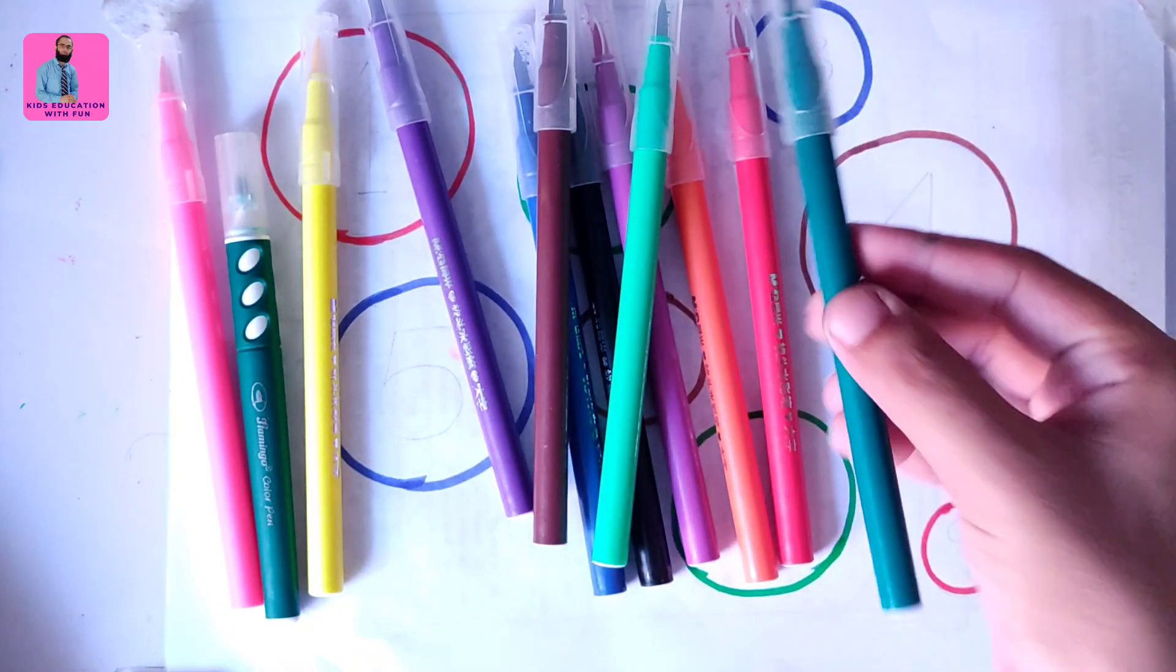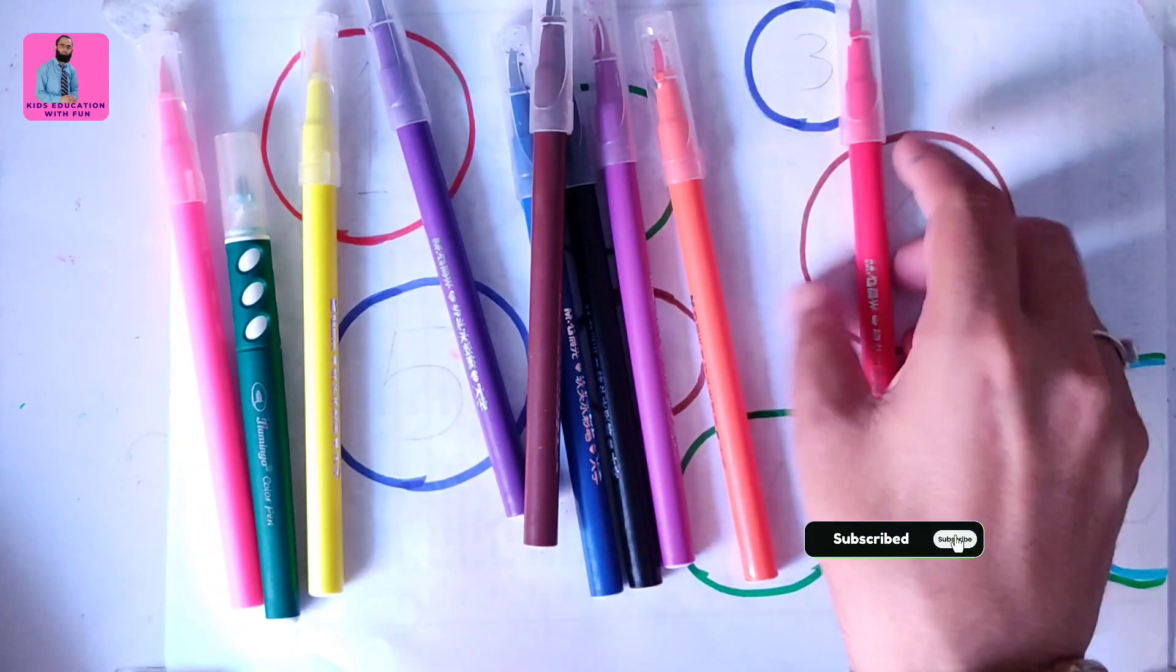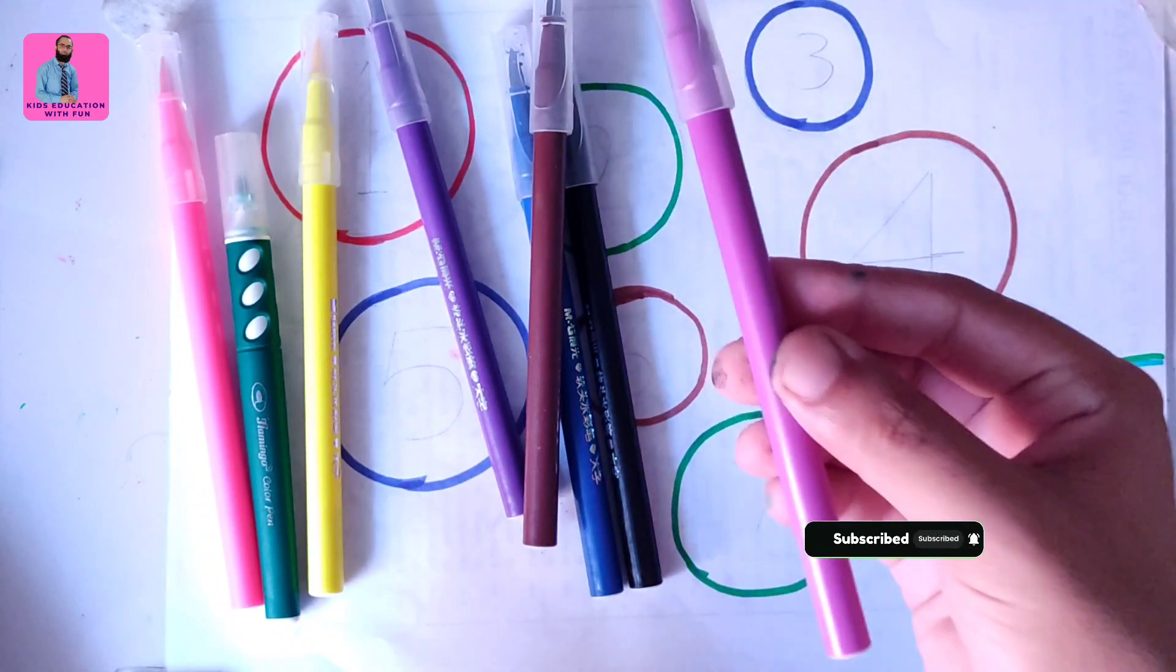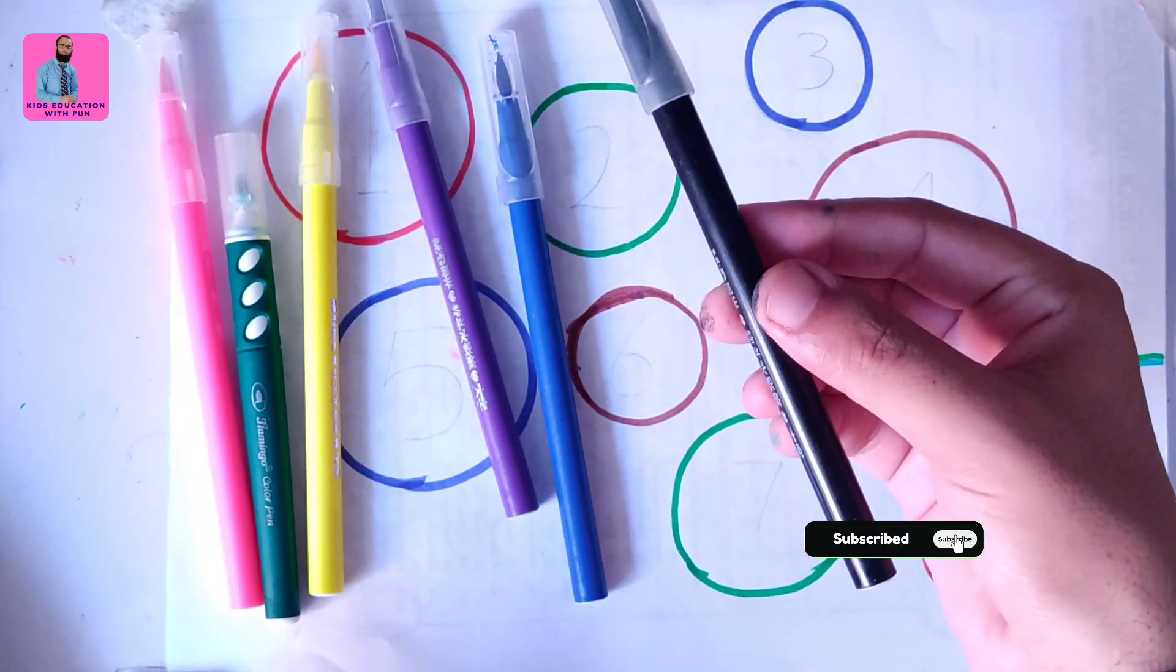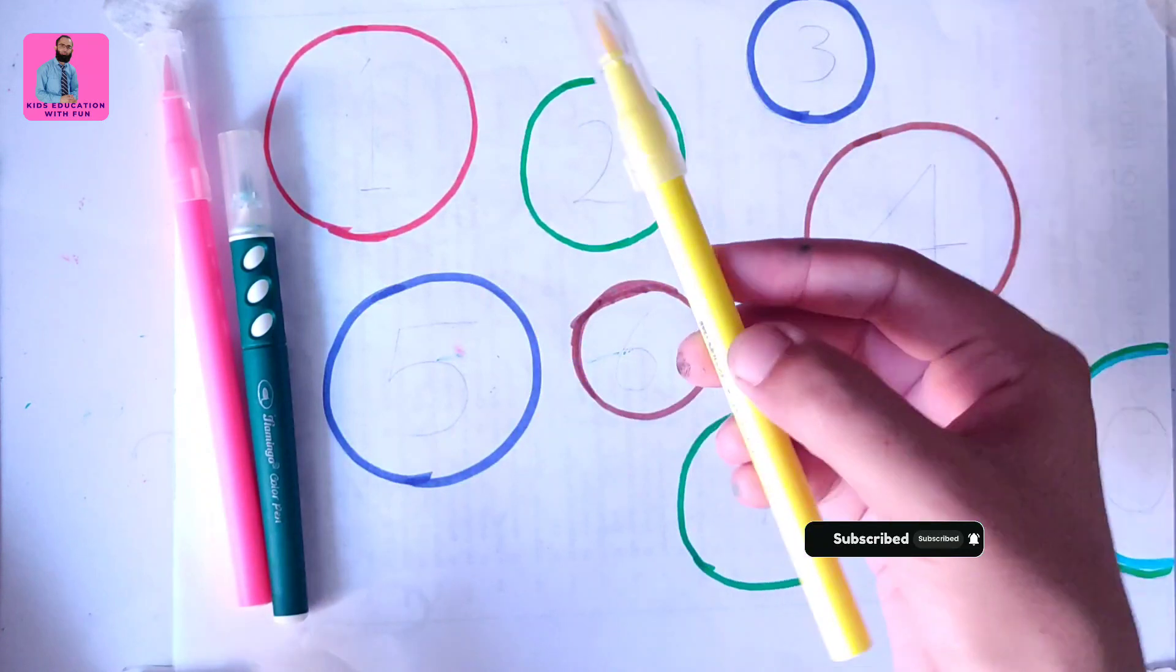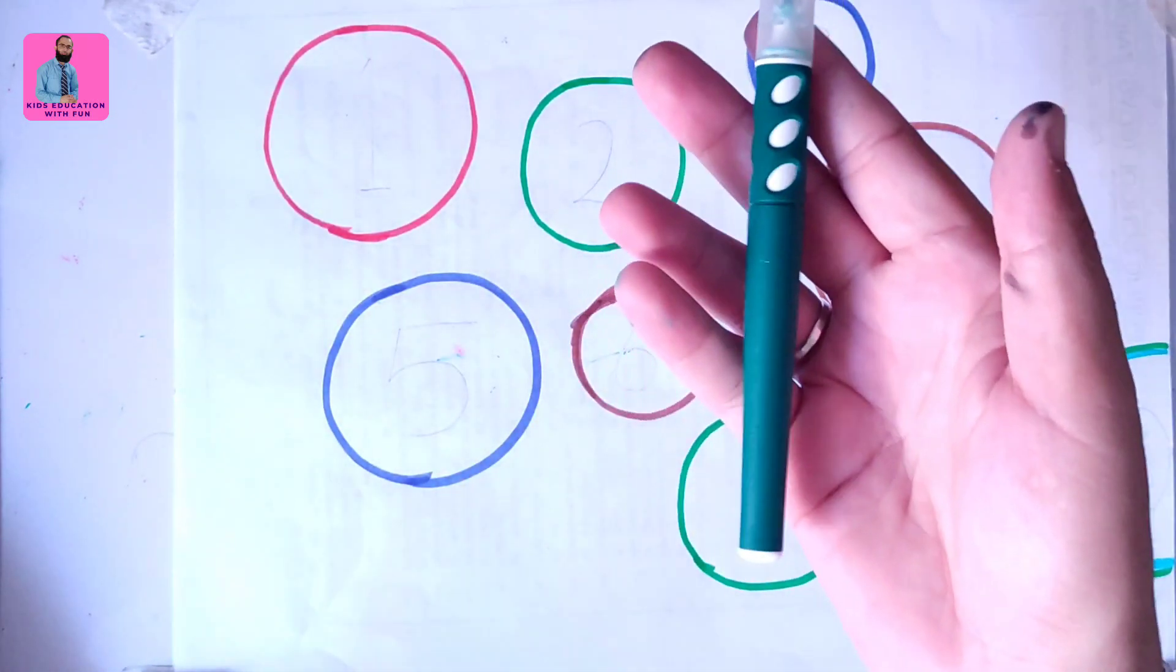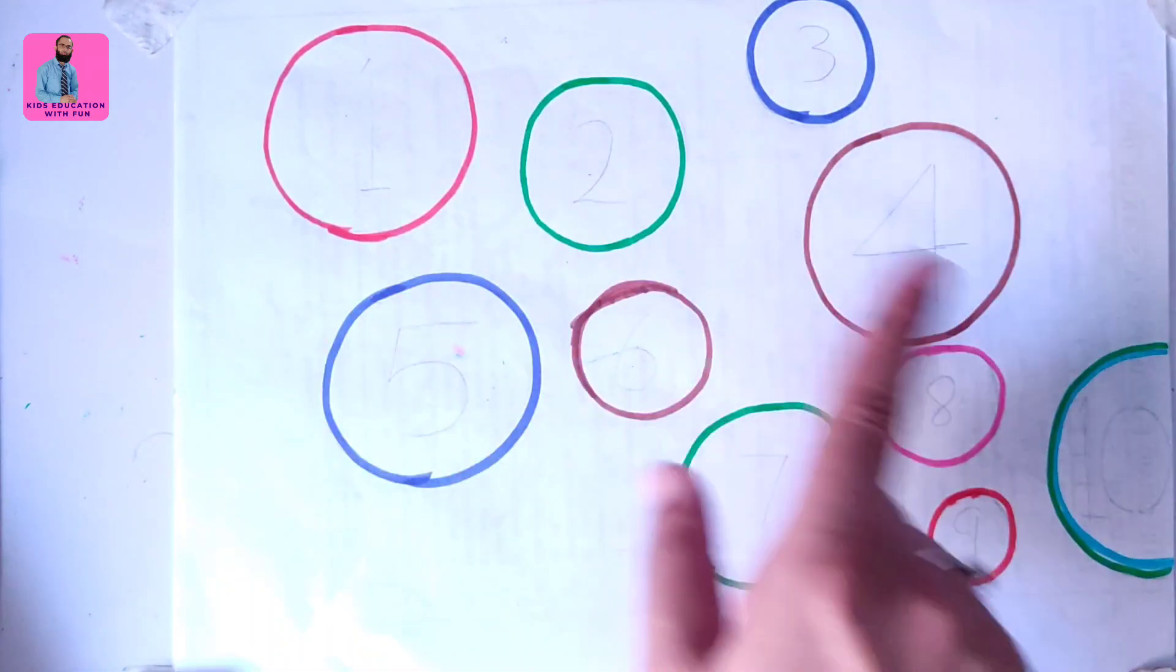Dark green color, parrot green color, red color, orange color, purple color, brown color, black color, dark blue color, violet color, yellow color, pink color, and this one is also dark green color. Let's start drawing numbers.